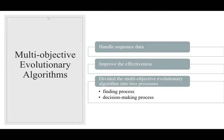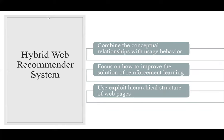The authors decided to use two different multi-objective evolutionary algorithms to make comparisons of effectiveness. Let's turn to the hybrid web recommendation system. With the exponential growth of data, the recommender system becomes more and more difficult to recommend precisely. According to recent research, quality of recommendation results can be improved by combining usage information and conceptual information. The authors propose a hybrid web recommendation approach that combines conceptual relationships on the internet with usage behavior. They put emphasis on improving the solution of reinforcement learning, using the exploit hierarchical structure of web pages instead of an ad hoc hierarchical structure.